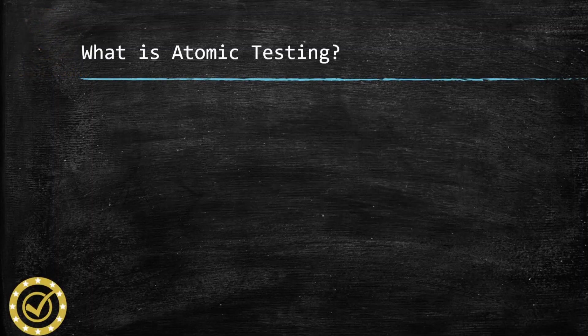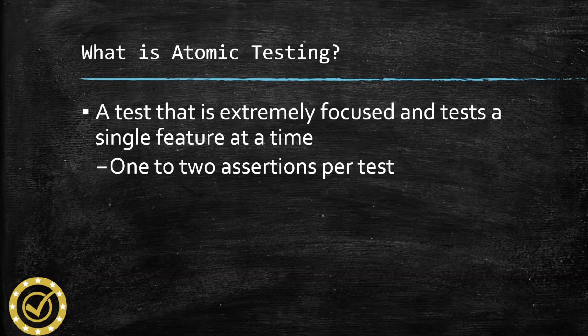What is atomic testing? An atomic test is one that's extremely focused and tests only a single feature at a time. So if you have a development background, the concept is widely used when creating unit tests. One question that seems to come up a lot when people are writing these kind of atomic UI tests is: does that mean I can only have one assertion? Well, no, you can have multiple.